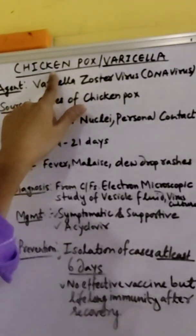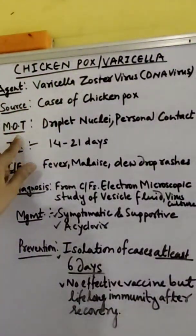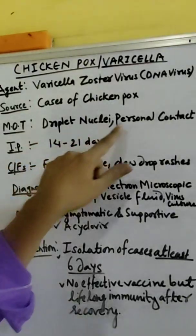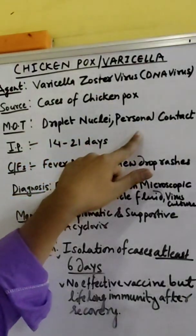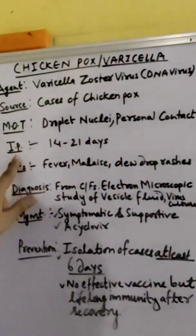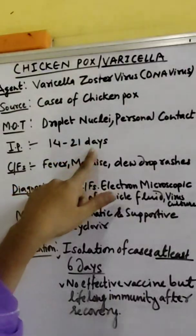But it also affects adults. The mode of transmission is droplet nuclei and personal contact. The incubation period is 14 to 21 days.